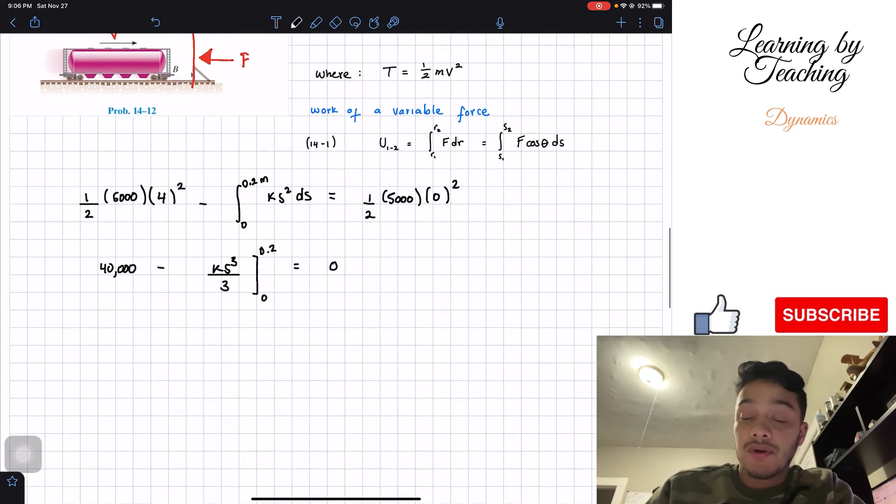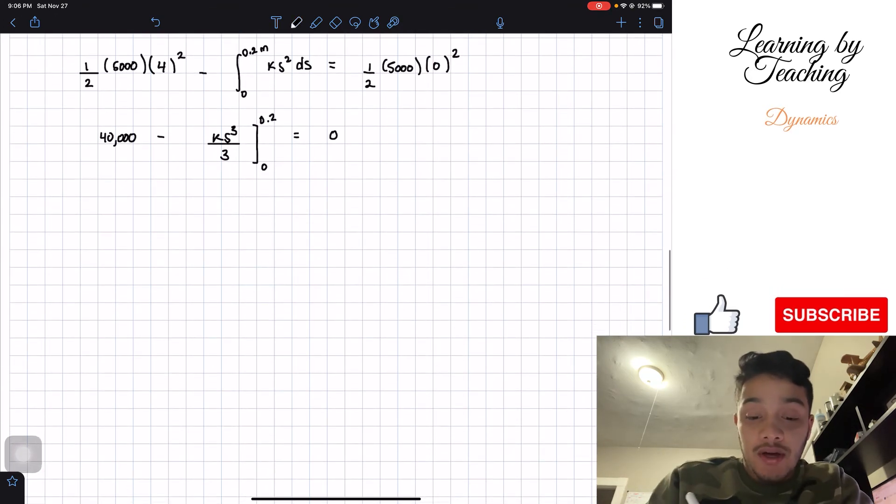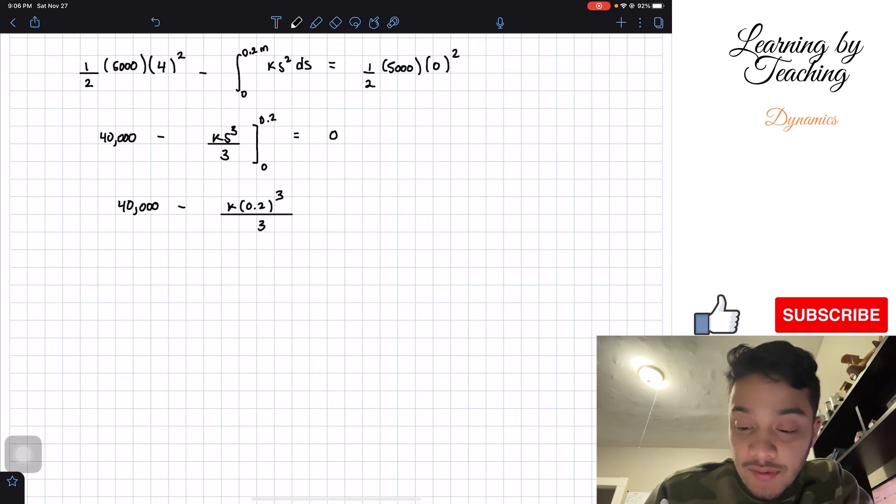So we need to apply our boundaries in here. Therefore we can have that 40,000 minus k, and then we're plugging 0.2 for my s, 0.2 cubed divided by 3, gotta be equal to 0.